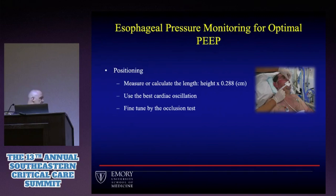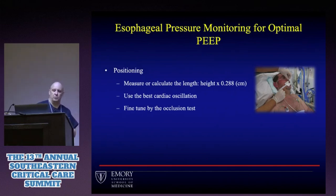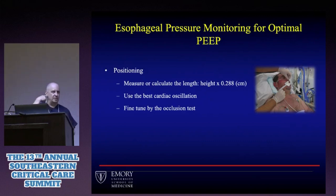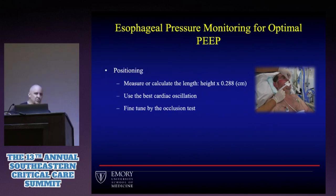For positioning the catheter, there are a couple of methods. Mathematically, take the patient's height in centimeters times 0.288 to get an approximate insertion depth. Alternatively, use the nurse's trick: measure from the side cord process, ear to nose, to estimate depth. Then fine-tune using an occlusion test, an expiratory hold maneuver on the ventilator, and either an abdominal squeeze or chest squeeze to verify positioning.